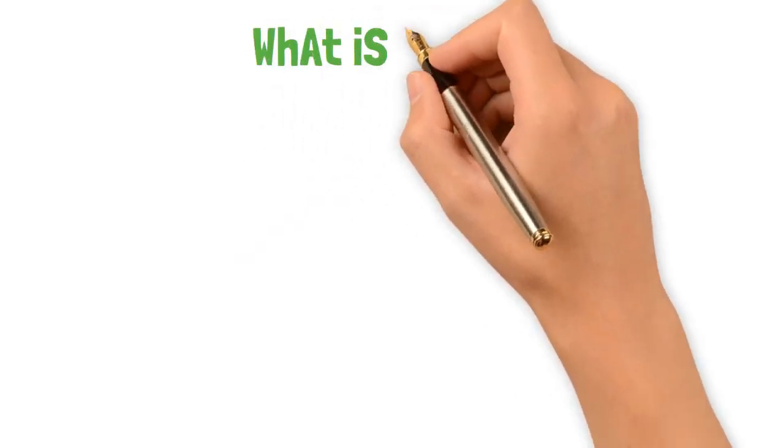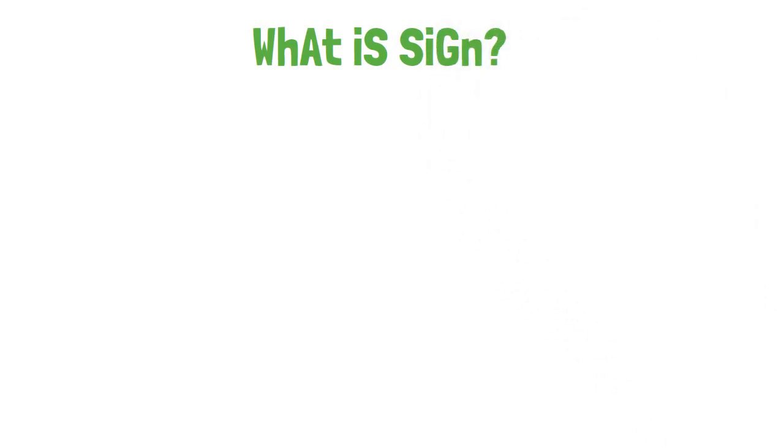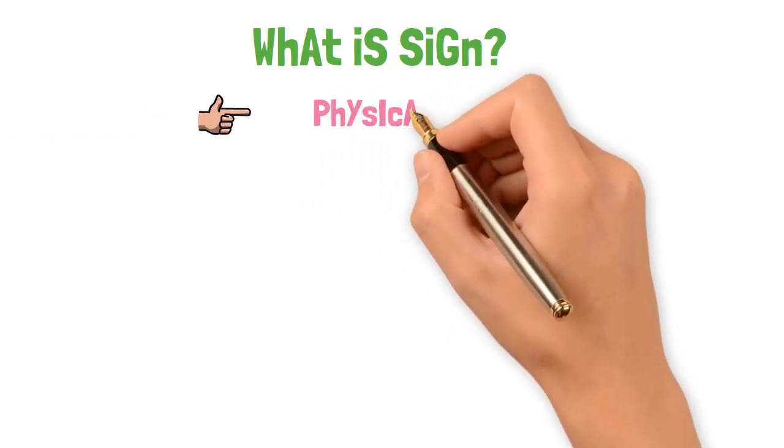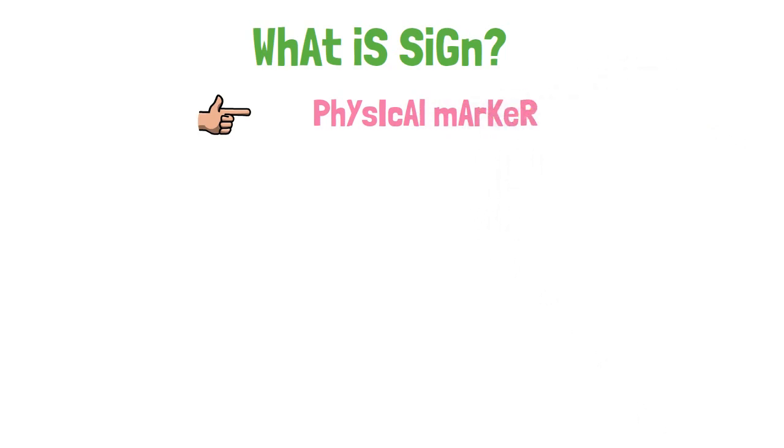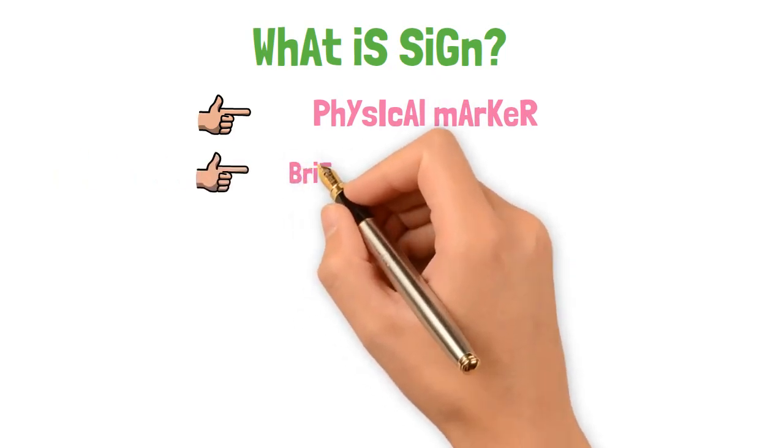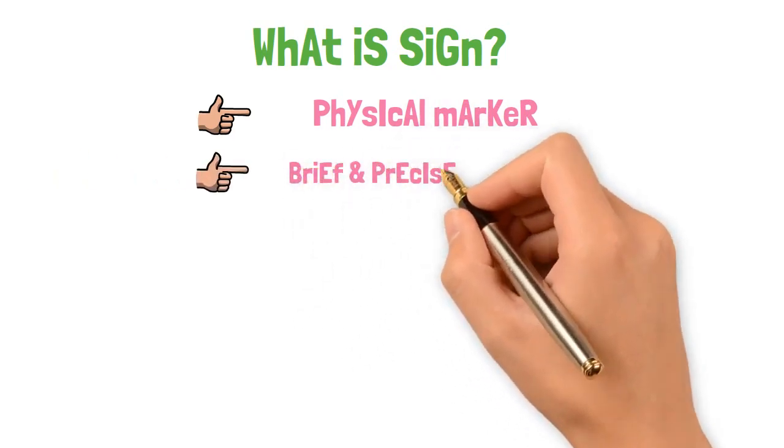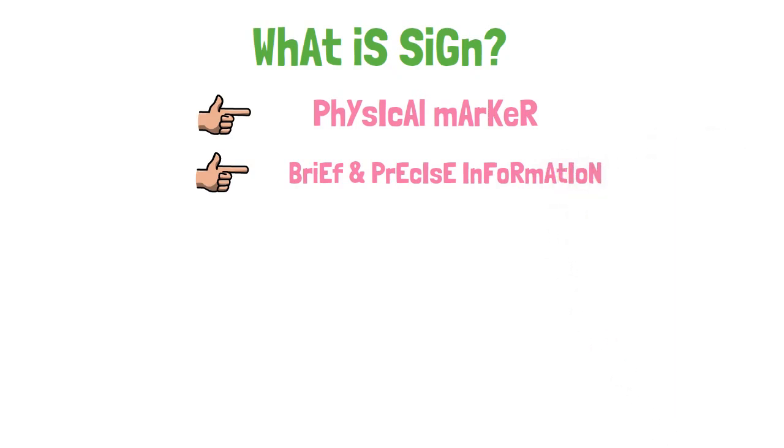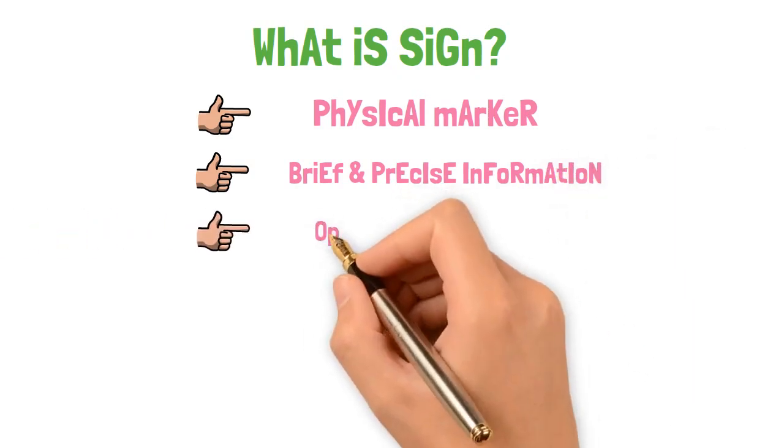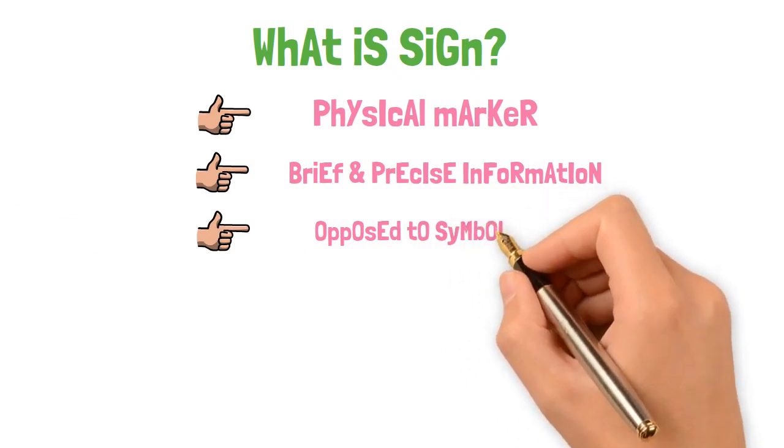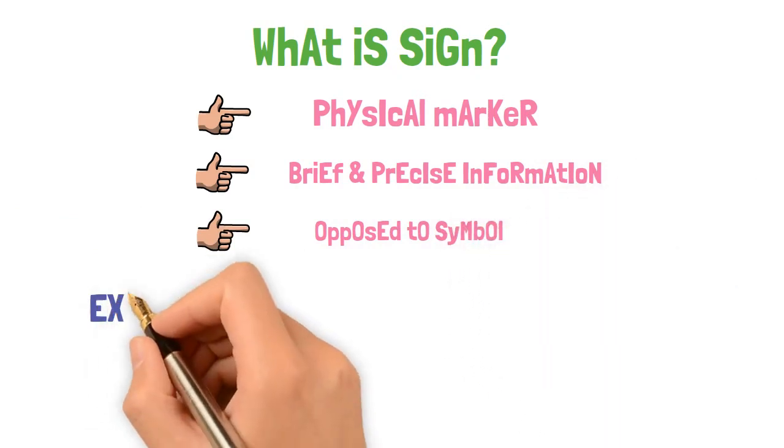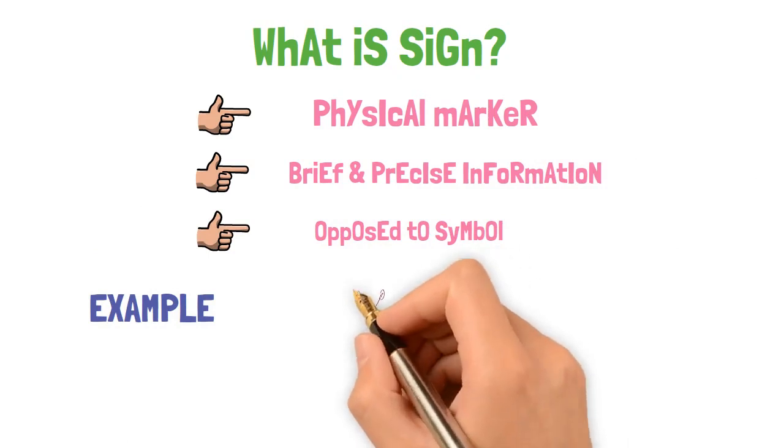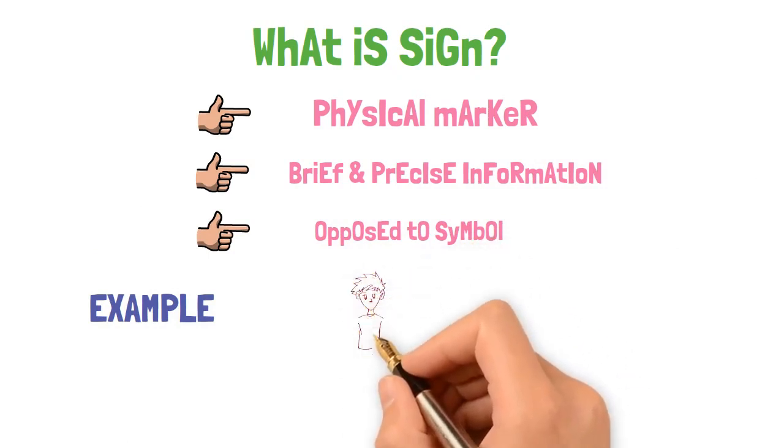Sign - first of all we will discuss about sign. Sign is a physical marker which carries some information and it gives direct and brief precise information about anything. I can say it is opposed to the symbols. Here I have example about sign. For instance, if the gesture of waving one's hand, it is a sign.